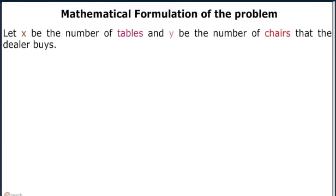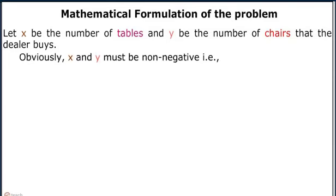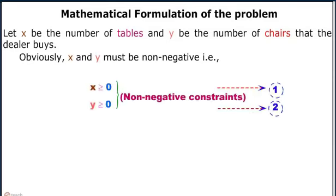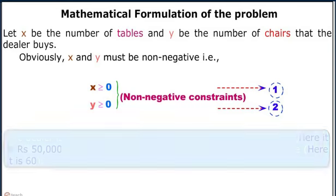Mathematical formulation of the problem. Let x be the number of tables and y be the number of chairs that the dealer buys. Obviously, x and y must be non-negative. So we have two constraints: x should be greater than or equal to 0, and y should be greater than or equal to 0. These are called non-negative constraints.